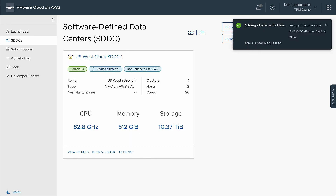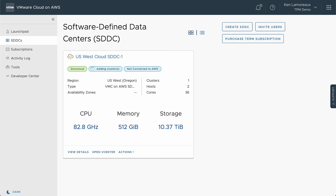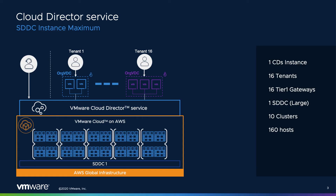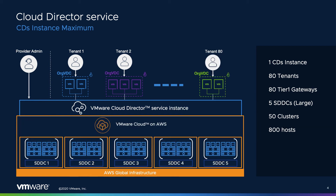When the deployment is complete, you will have additional resources available in the SDDC instance, but you will need to configure those resources to be available for your tenants in Cloud Director Service before they can be used. You can continue to add hosts and clusters to your SDDC instance until you reach the maximum of 10 clusters. A fully deployed environment can provide up to 160 hosts to be used by as many as 16 tenants in Cloud Director Service. You can still scale Cloud Director Service even further by associating additional SDDC instances up to an initial soft limit of five SDDC instances. This scales the environment to as many as 80 tenants using 50 clusters and 800 hosts.